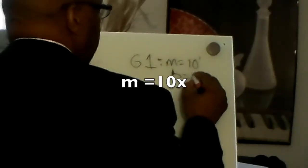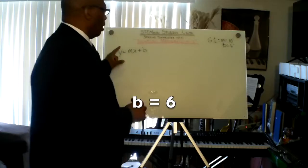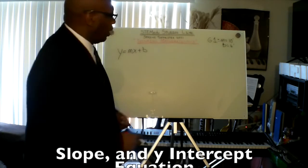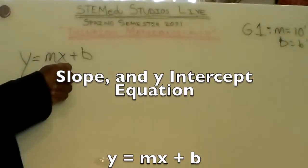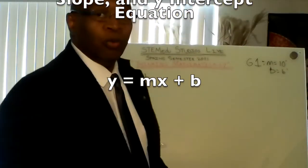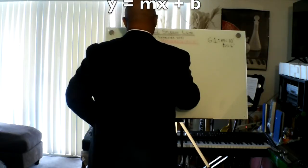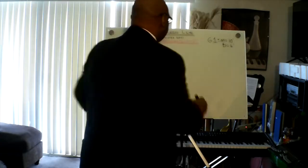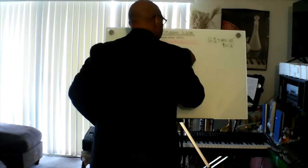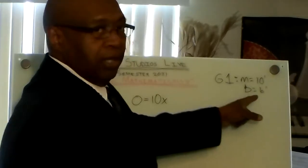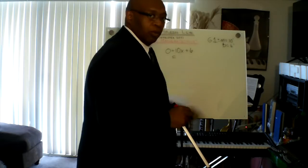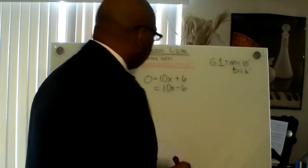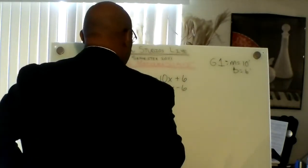We're going to use our slope and y-intercept equation: y equals mx plus b. We're going to substitute y with 0. 0 equals m — Glider 1 is 10 — x, and b equals 6.